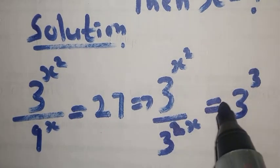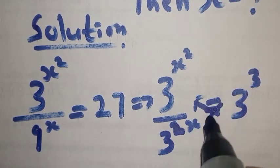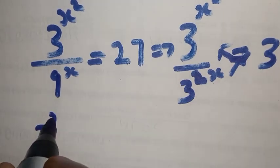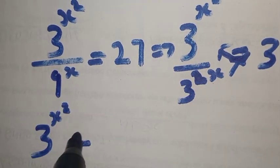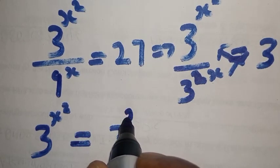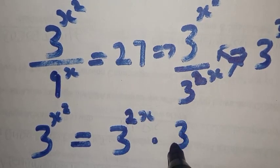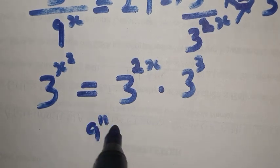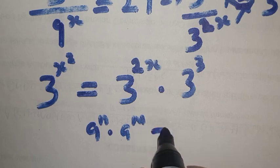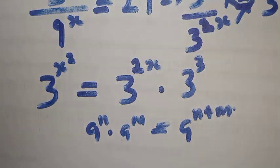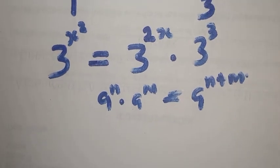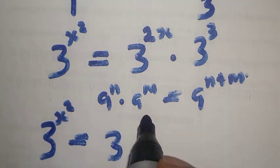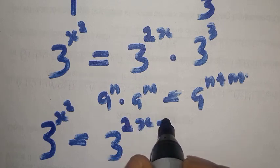From here we cross multiply. This can be rewritten as 3 raised to power s squared equals 3 raised to power 2s times 3 raised to power 3. Recalling that a raised to power n times a raised to power m equals a raised to power n plus m.